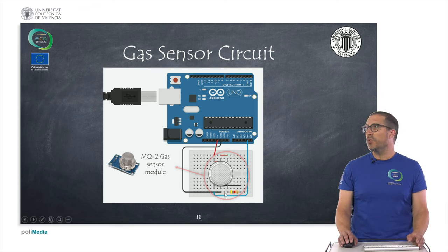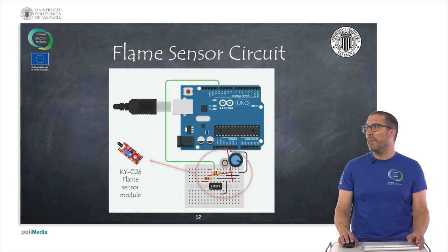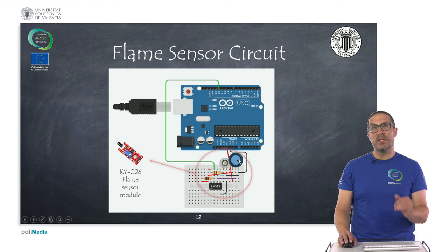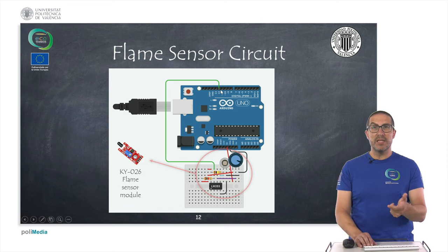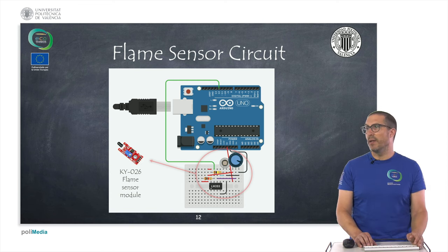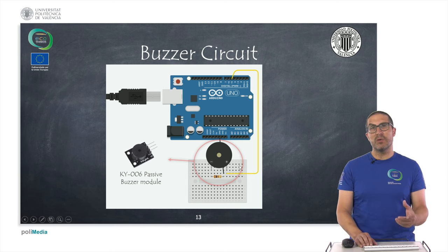In Tinkercad, for the gas sensor we use this sensing element and do the proper connections to get a signal to measure gas concentration. For the flame sensor we use a photoresistor or phototransistor with the LM393 comparator, a couple of resistors, and a potentiometer fixed to a specific value. By modifying the radiation on the sensor, we get a digital output that activates or deactivates accordingly. The buzzer uses this element in Tinkercad together with a resistor, and by generating a PWM signal we can control the sound frequency.